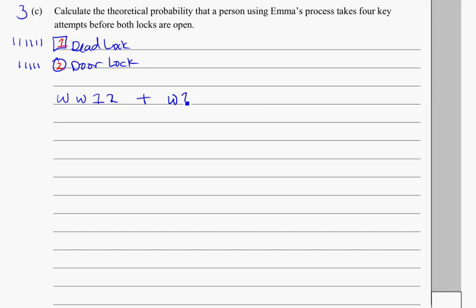Or, she can do the wrong key, get the deadbolt, do the wrong key on the door, and then get the door. Or, she could get the deadbolt on the first try, take two wrong attempts on the door, before she finally gets the correct one on the door.